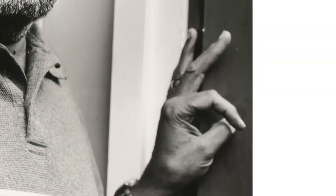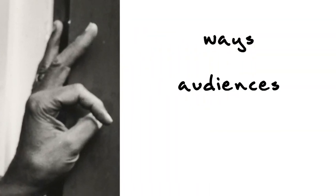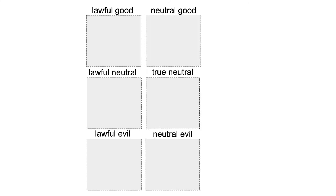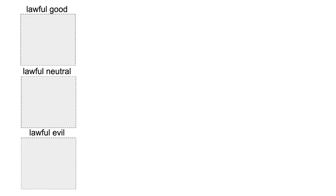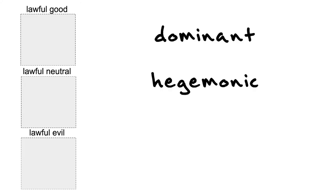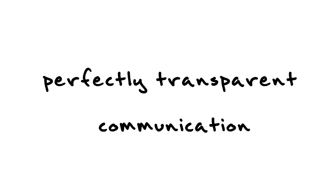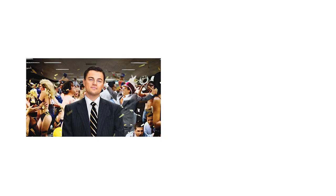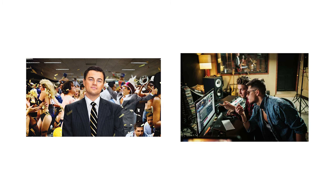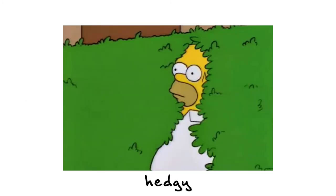Through things like the dominant cultural order, the encoding process can limit but cannot prescribe a certain way to decode a message. Hall presents three different ways audiences can decode an encoded message — I like to think of them as lawful, neutral, and chaotic. The first is the dominant hegemonic code. In this decoding position, the audience decodes the message in the exact same way the producers encoded it — the professional code. Communication is perfectly transparent, but elites and producers may use this to push a certain ideology and keep it in hegemony.